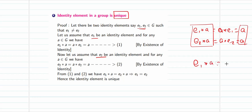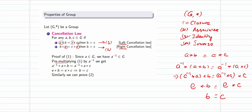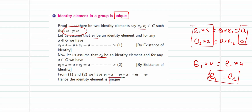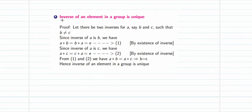Since both expressions equal a, we have e₁★a = e₂★a. By the cancellation law, we can cancel a from the right, giving e₁ = e₂. But we assumed e₁ ≠ e₂ — a contradiction. Therefore, there cannot be two different identity elements; the identity element is always unique.